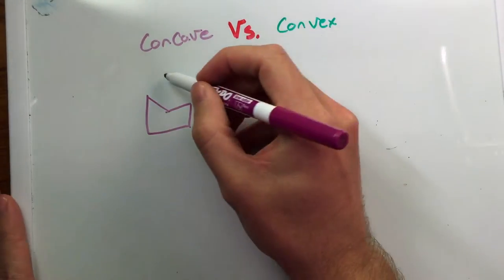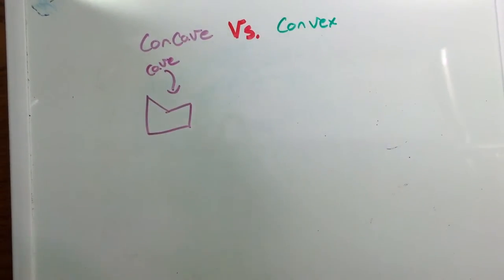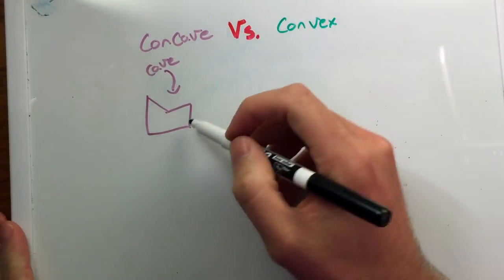I always like to say a concave polygon makes a little cave. But the real definition of a concave polygon is you need to imagine that each one of these lines continues forever, each one of these segments.